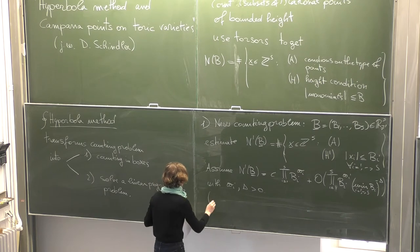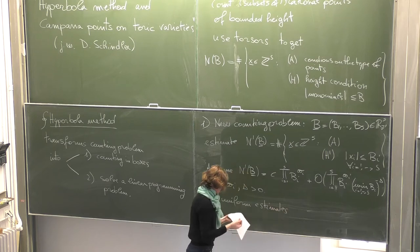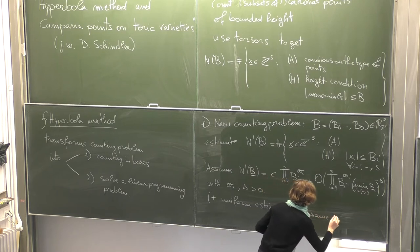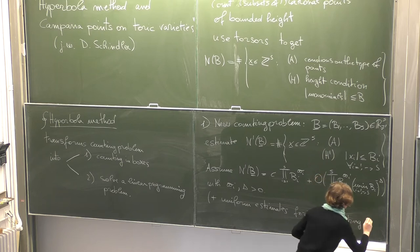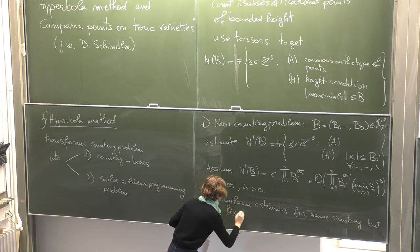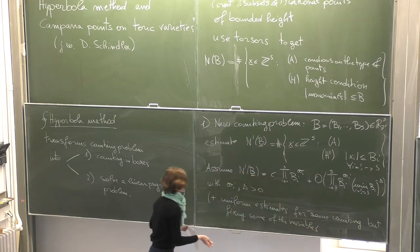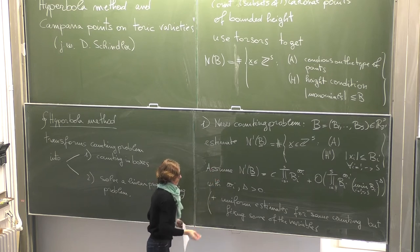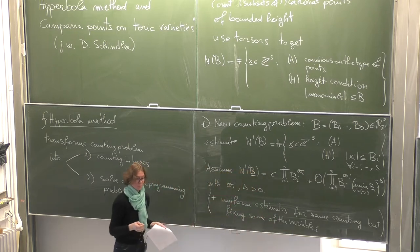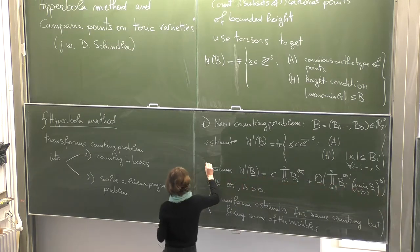We also need some additional assumptions — essentially uniform estimates for the same counting function, but when we fix some of the variables xi. We want the counting when fixing some variables to look essentially the same, where some constant depends on the fixed variables and these constants are uniform. I'm going to call this condition star for later application in our theorem.